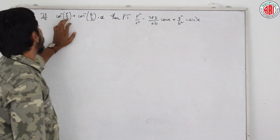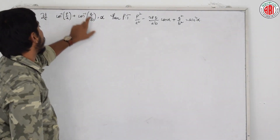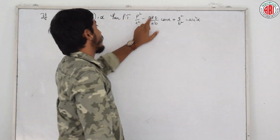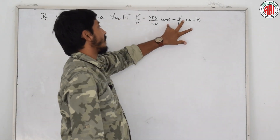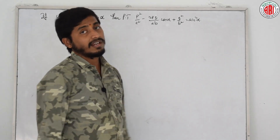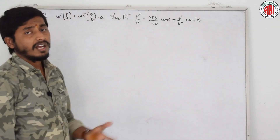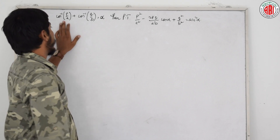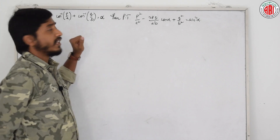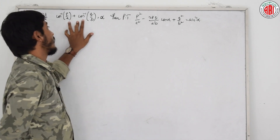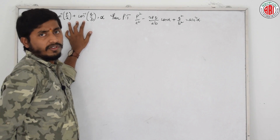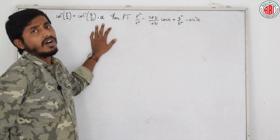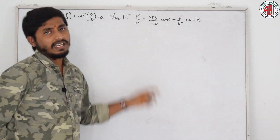Now see here. If cos inverse p by a plus cos inverse q by b is equal to alpha, then prove that p square by a square minus 2pq by ab cos alpha plus q square by b square equals sin square alpha. To solve this, we have to use the formula for cos inverse x plus cos inverse y. Do we know the formula? Yes, we know it. Either we can simplify using the formula or directly write it.